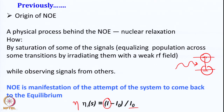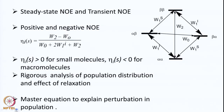The NOE enhancement is given by the signal obtained because of perturbation, I, minus the original signal I0, divided by I0. So eta equals (I minus I0) / I0. We then looked at two kinds of NOE: steady state NOE and transient NOE, and also at positive NOE versus negative NOE — in some cases you get a positive enhancement and in some cases a negative enhancement.